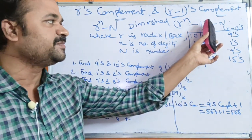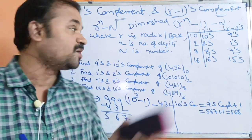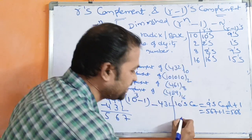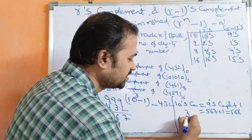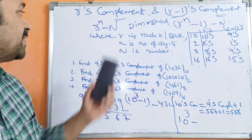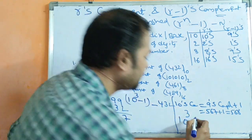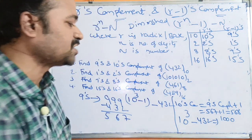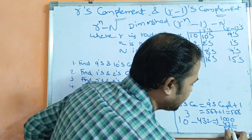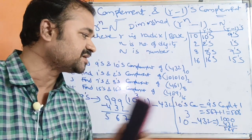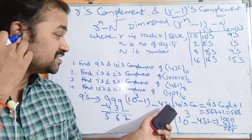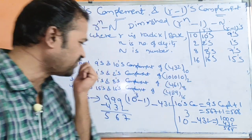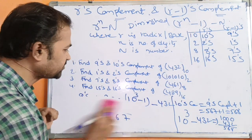Using the formula directly: 10's complement uses R^n minus N. Base is 10, digits are 3, so 10^3 minus 432 = 1000 minus 432 = 568. For the remaining problems, we will solve directly without using the formula, as it makes problem-solving quite easy without needing number conversions.